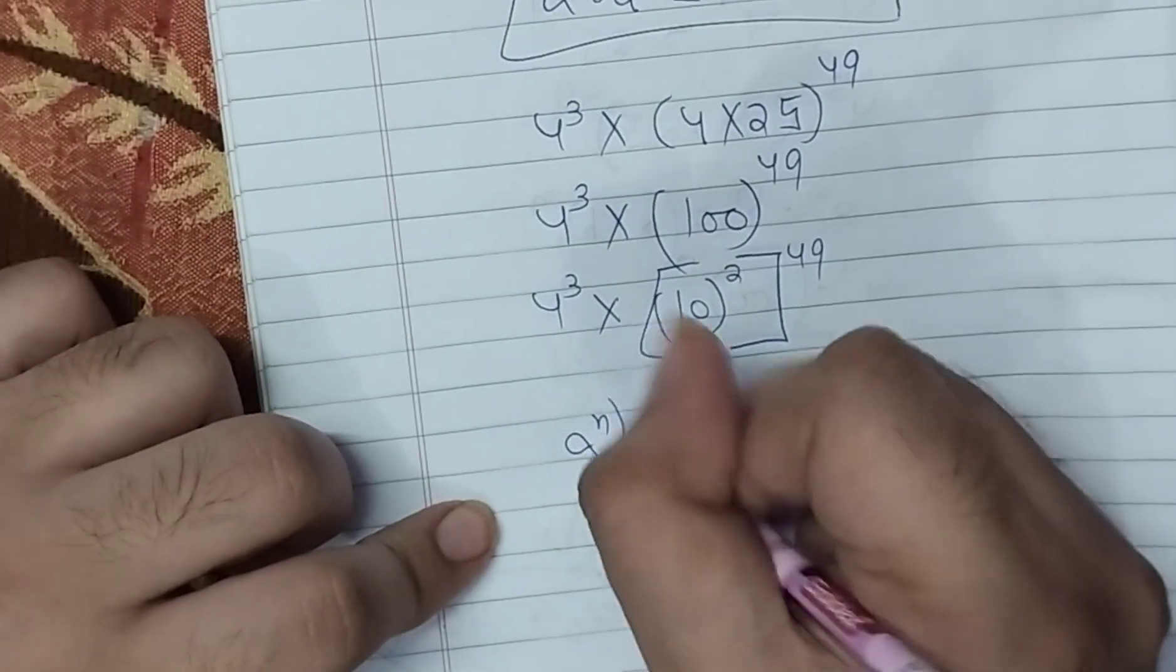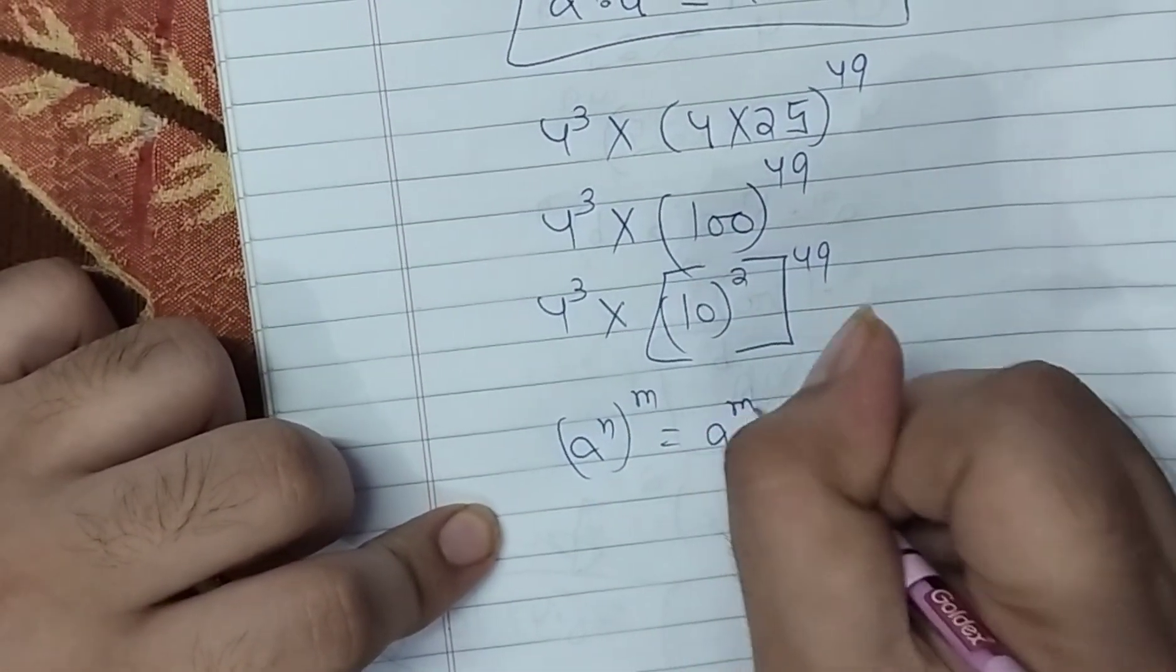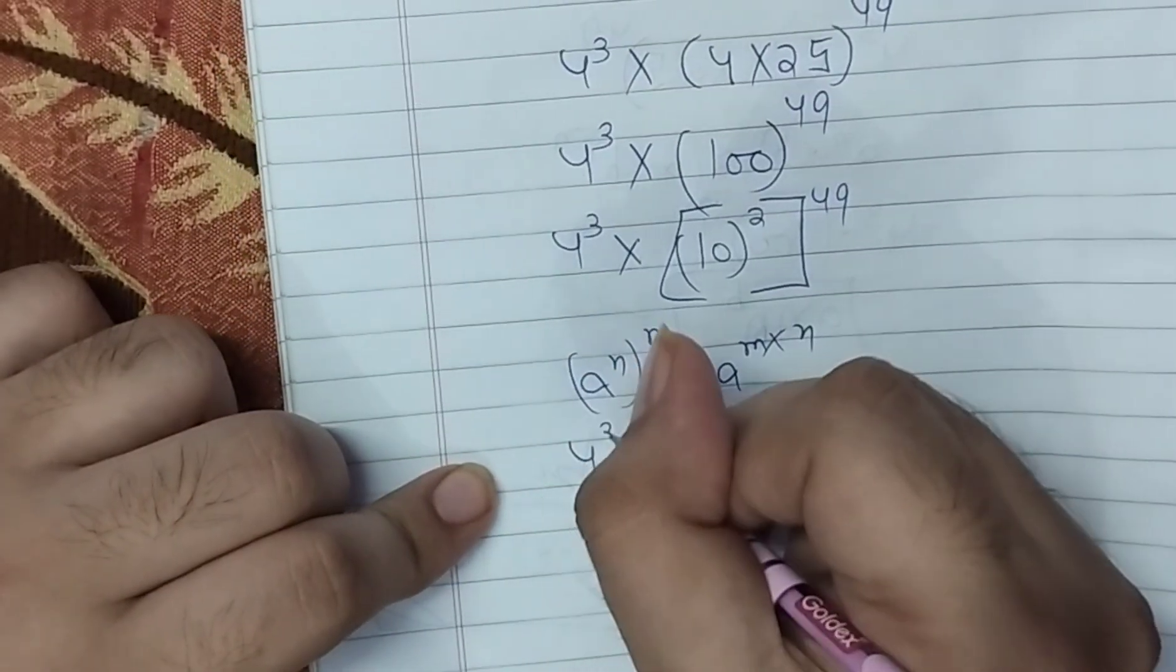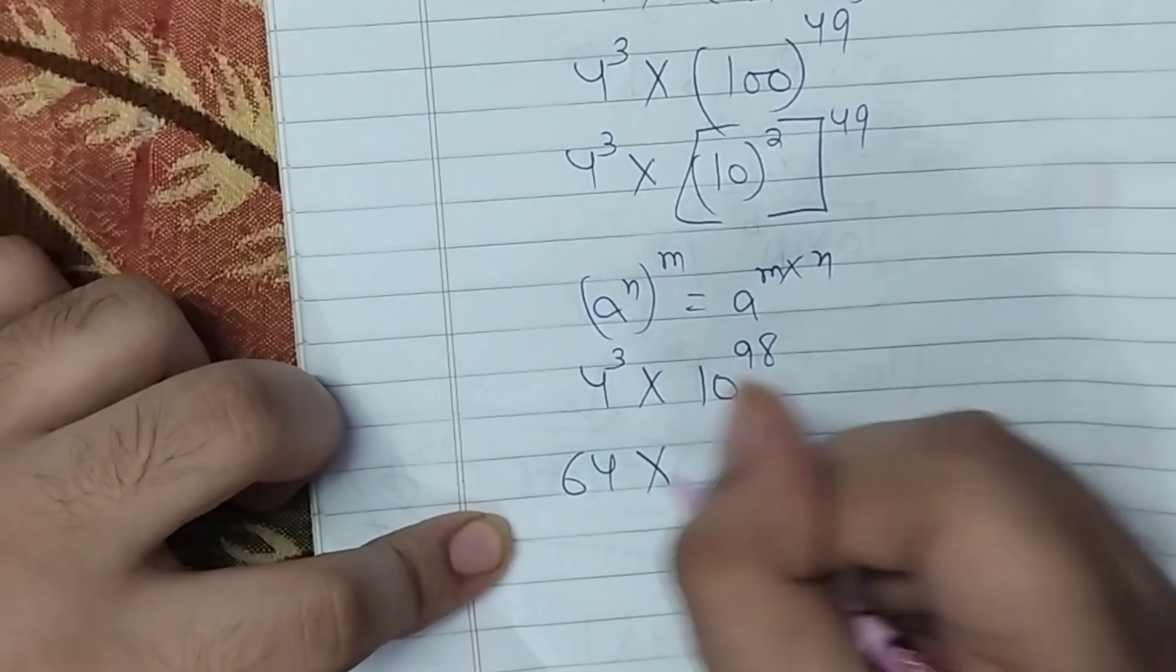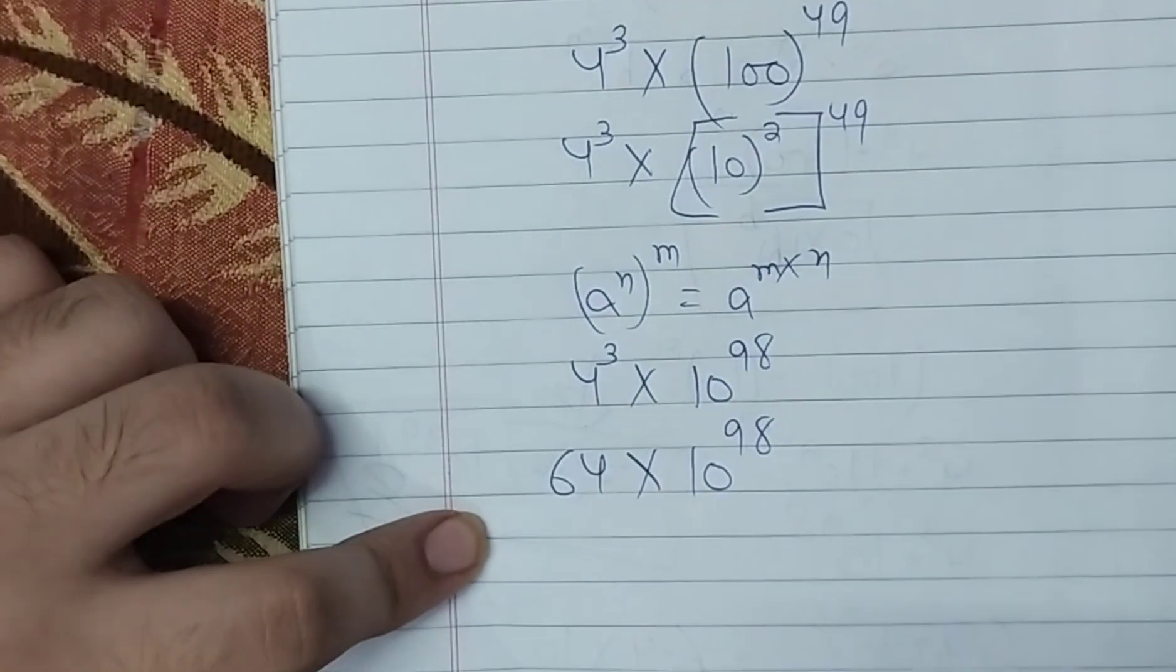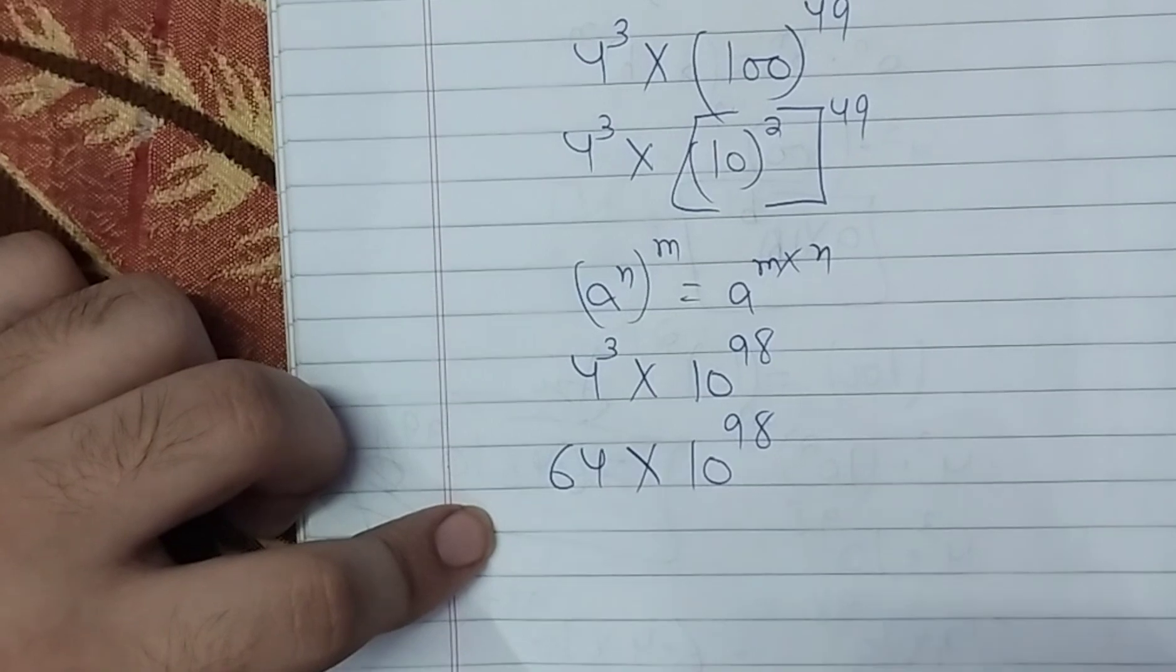a to the m to power n is a to the m times n. 4 to power 3 multiplied by 10 to power 98. 4 to power 3 is 64 multiplied by 10 to power 98. Here you can see standard form.